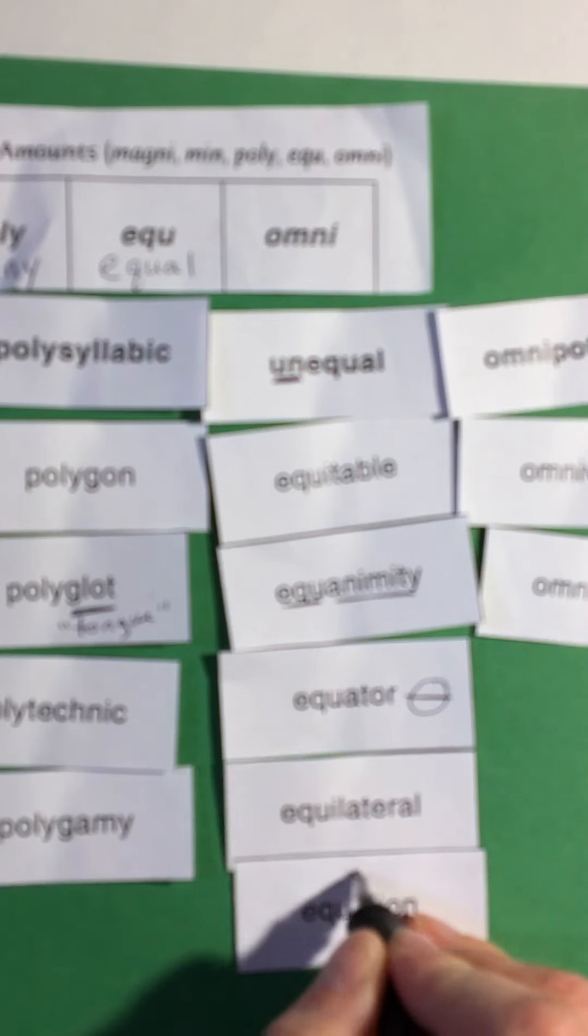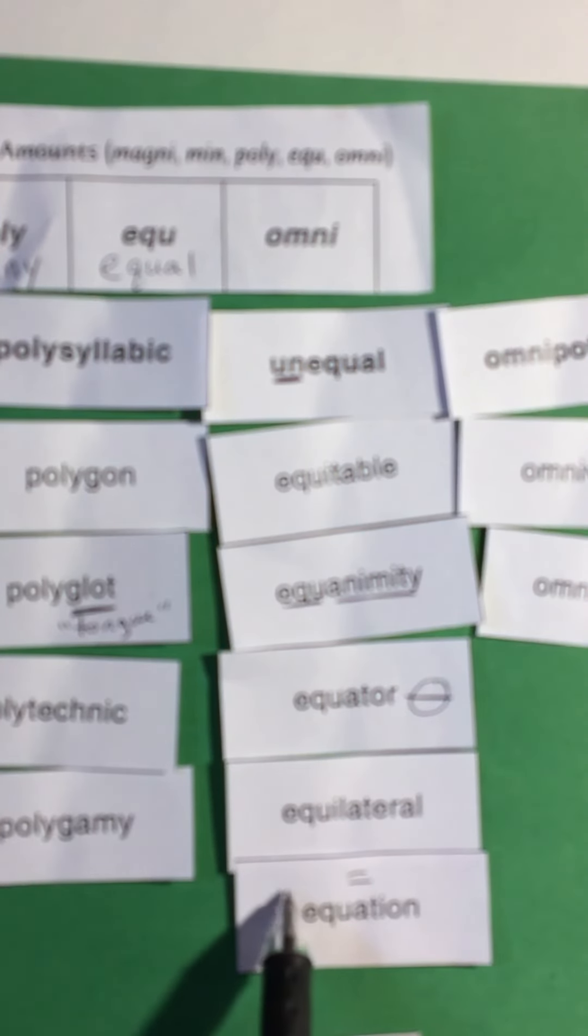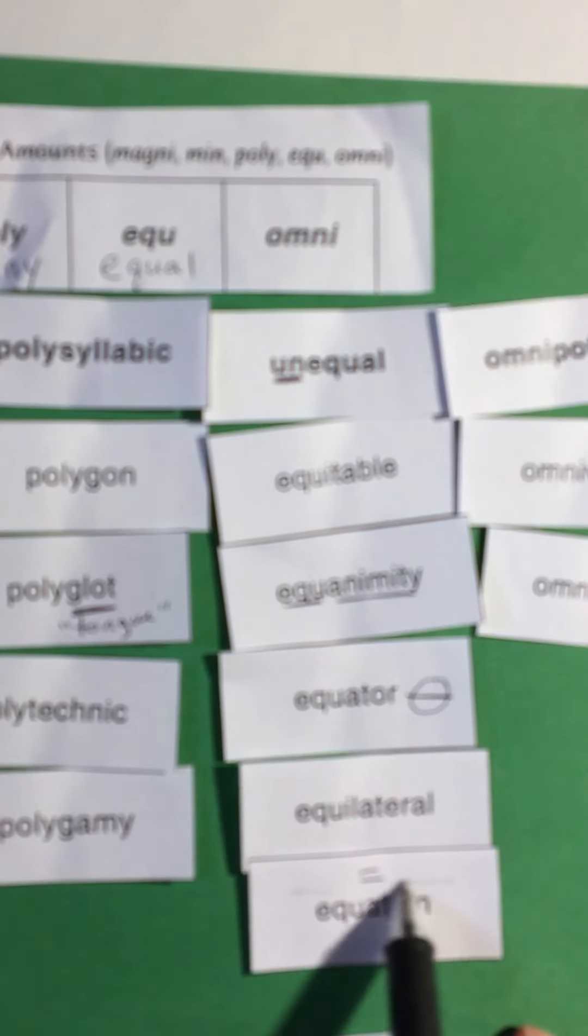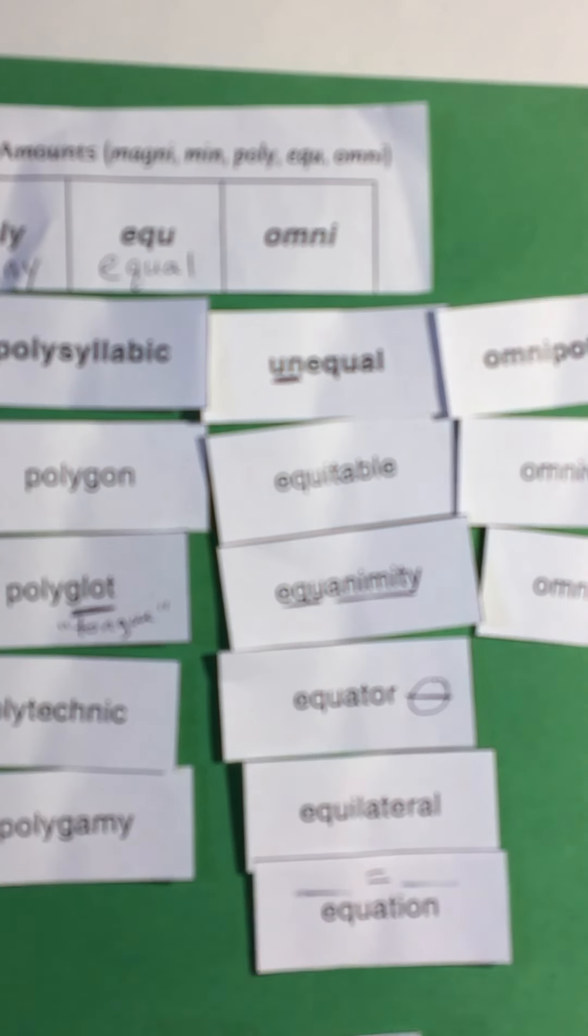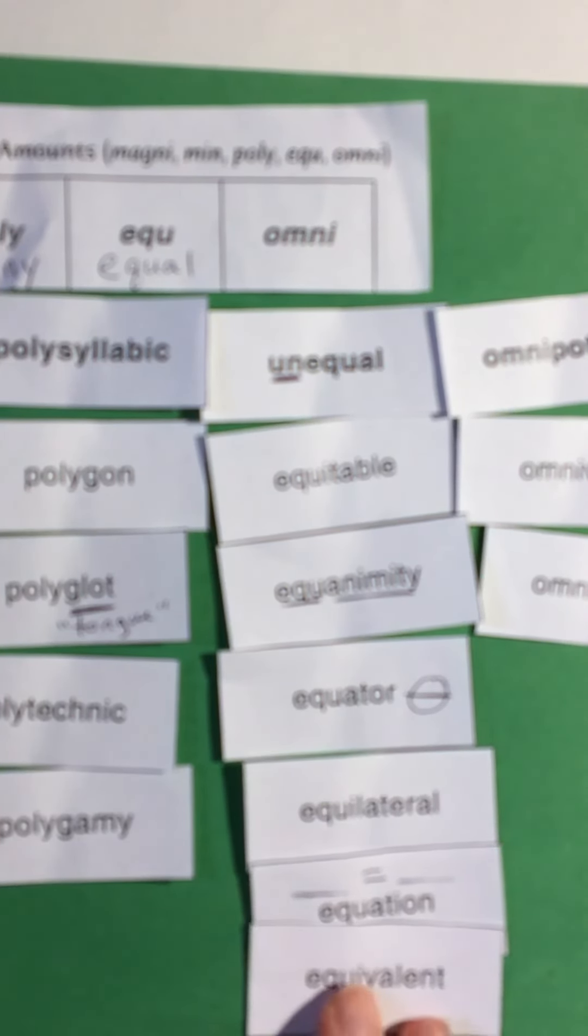An equation, you know the equal sign, on both sides of the equation it has to be the same, it has to be equal. And then equivalent would mean, say an equivalent fraction, both fractions equal the same thing, they're both the same thing. Whether you have one over two or say three over six, they're both half, and those fractions are equivalent.